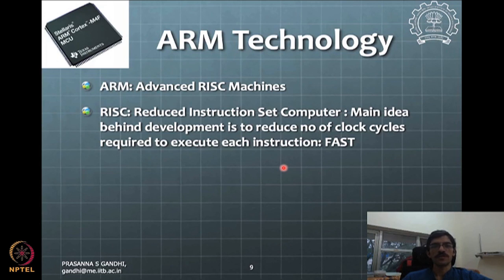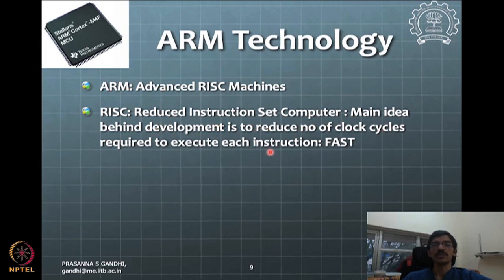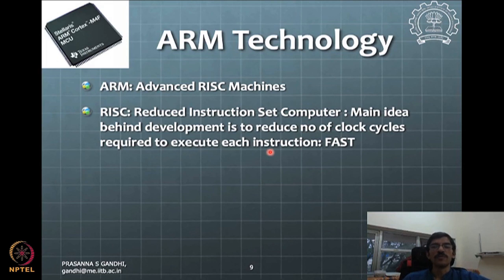The main crux of this technology is that ARM stands for Advanced RISC Machine. RISC stands for Reduced Instruction Set Computer. The main philosophy here to develop this kind of technology is to reduce the number of clock cycles required to execute whatever instruction is to be executed. Each of the instructions that you execute — say you want to move some contents of one register to another — takes some finite number of clock cycles, and those clock cycles determine how much time is taken for execution of the command.